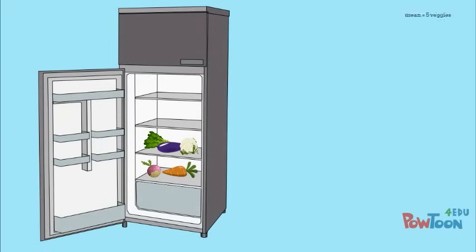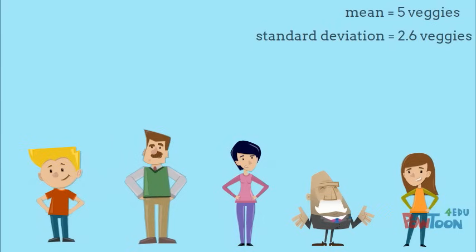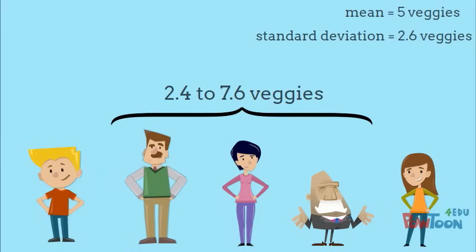The mean number of vegetables is 5 with a standard deviation of 2.6 veggies. Knowing that about two-thirds of the data fall within one standard deviation of the mean, assuming the data is normally distributed, we can say that about two-thirds of our friends have between 2.4 and 7.6 vegetables in their fridges.